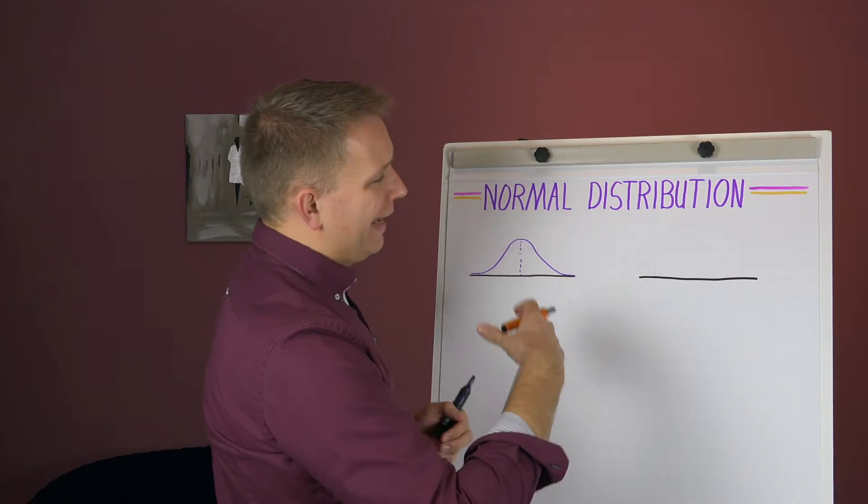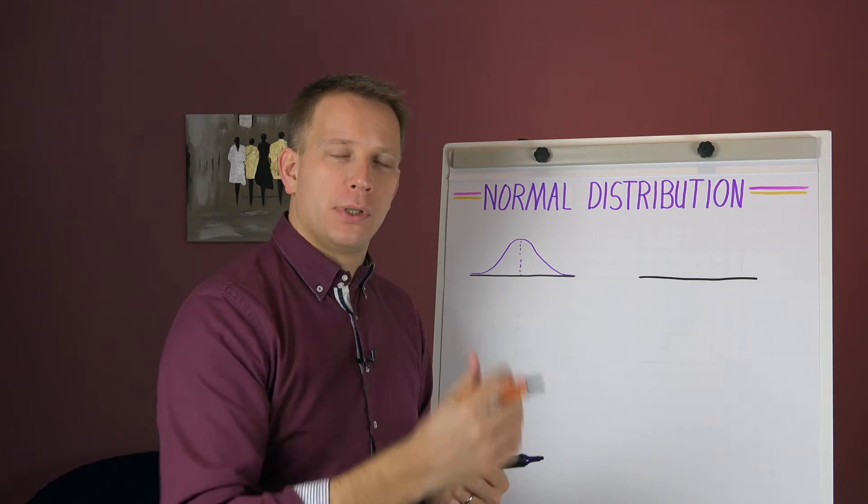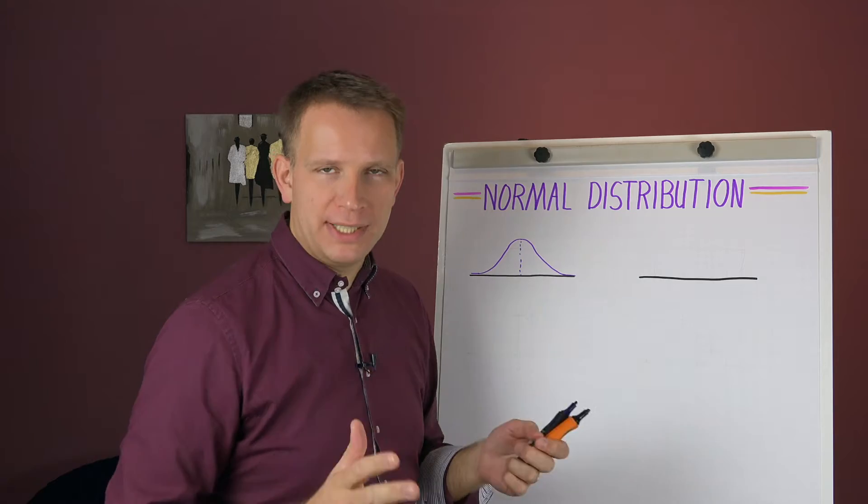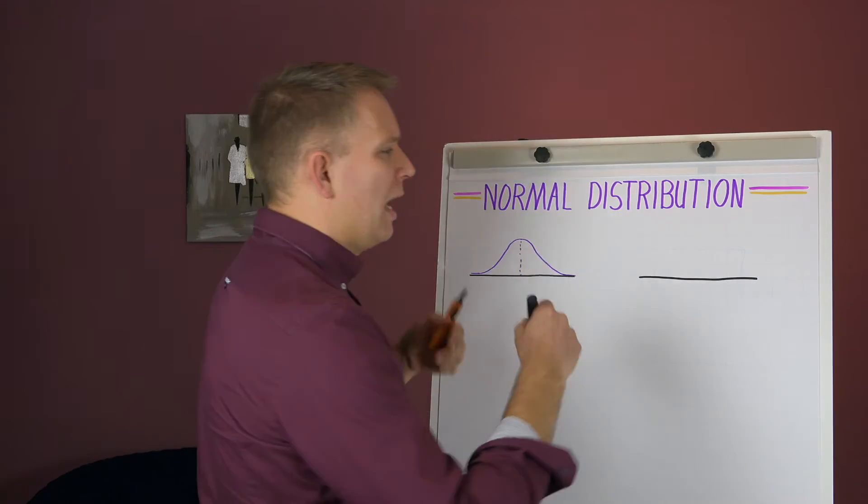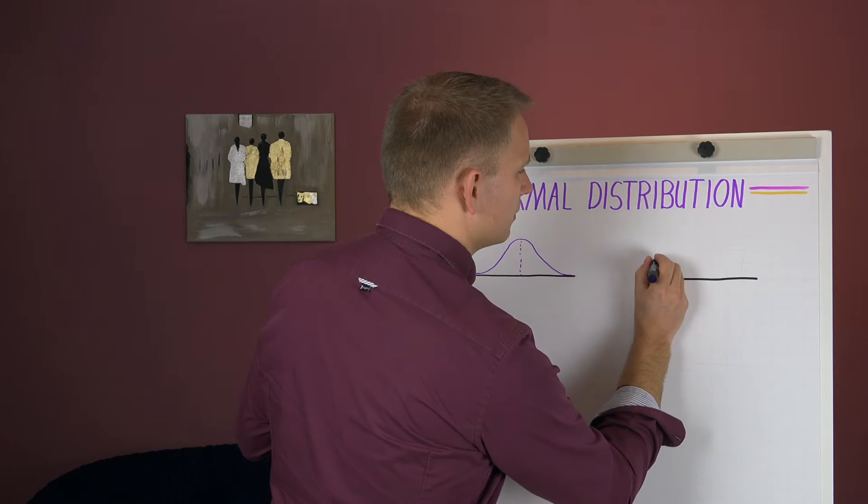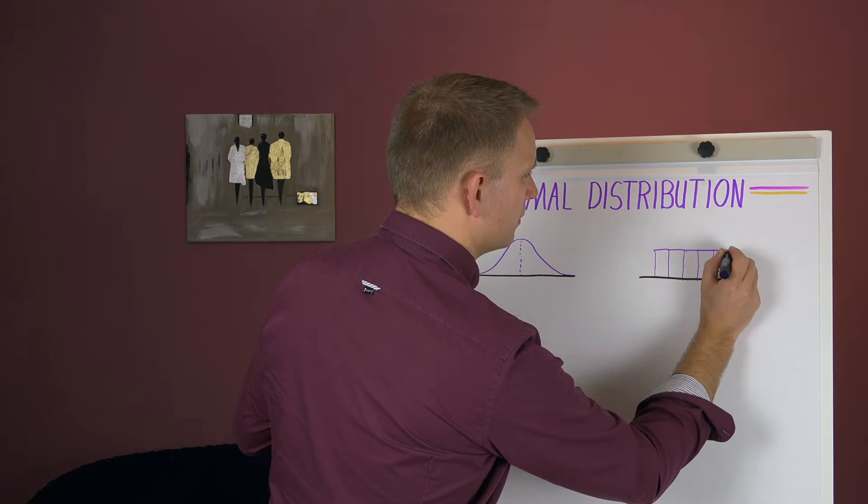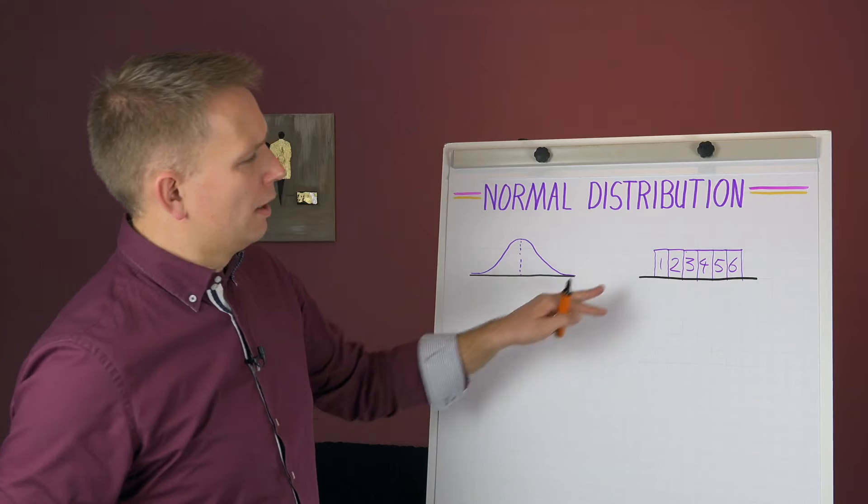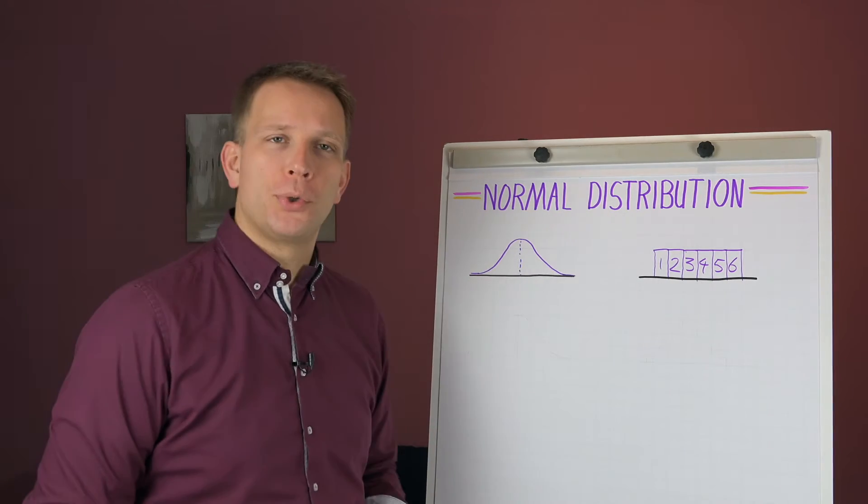So we draw a number line, and then we plot on that how often do we roll this number? Now, let's just say that I roll six times and I get a very nicely distributed way of rolling. So I roll a one, and I roll one, two, and I roll a three. So I roll the same amount of each of those six numbers.